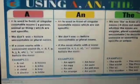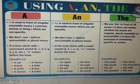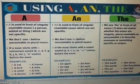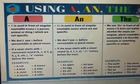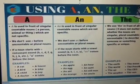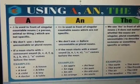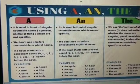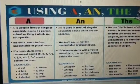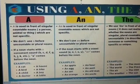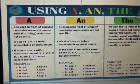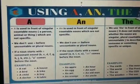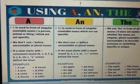Now, in this chart I will explain again about these three articles. First of all, 'a' is used in front of singular countable nouns — for example, a person, animal or thing — which are not specific. We don't use 'a' before uncountable or plural nouns.